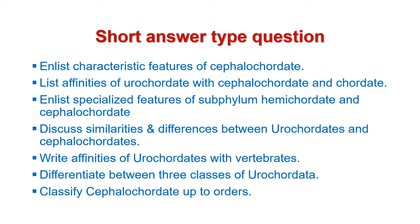Next is: write affinities of Urocordates with Vertebrates. Next is: differentiate between the three classes of Urocordata. And the last question from this category is: classify Cephalocordata up to orders.